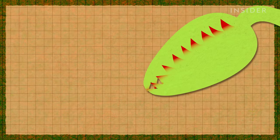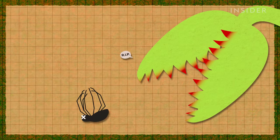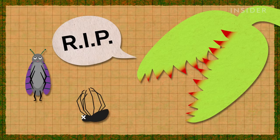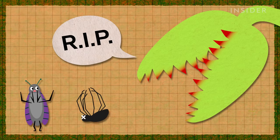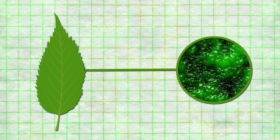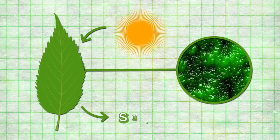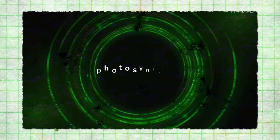Next, the trap reopens and the husk tumbles out. The trap is now ready for its next meal. But bugs aren't the only food the trap captures. Just like leaves on other plants, the trap's surface contains a green pigment that lets it convert the sun's energy into sugar through a process called photosynthesis.